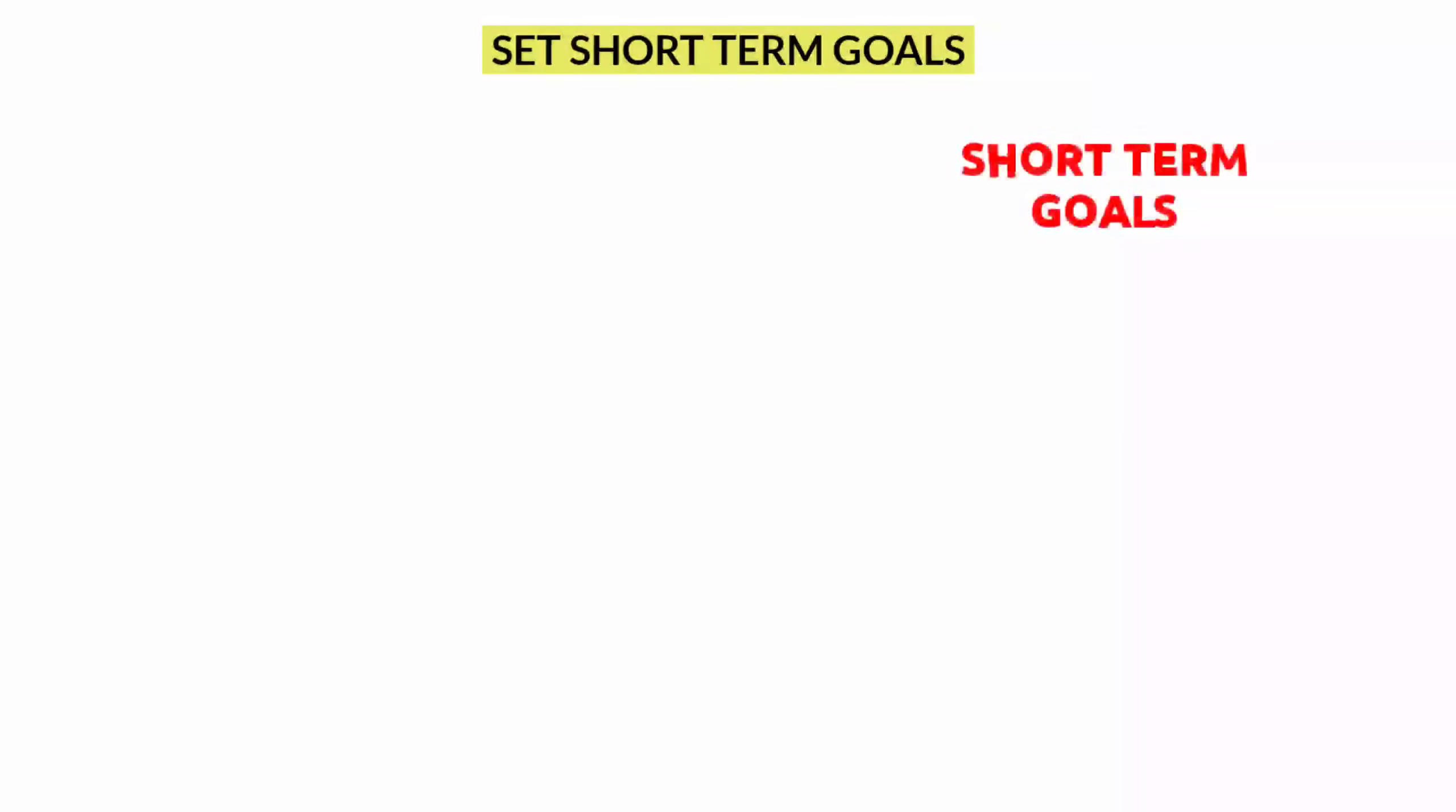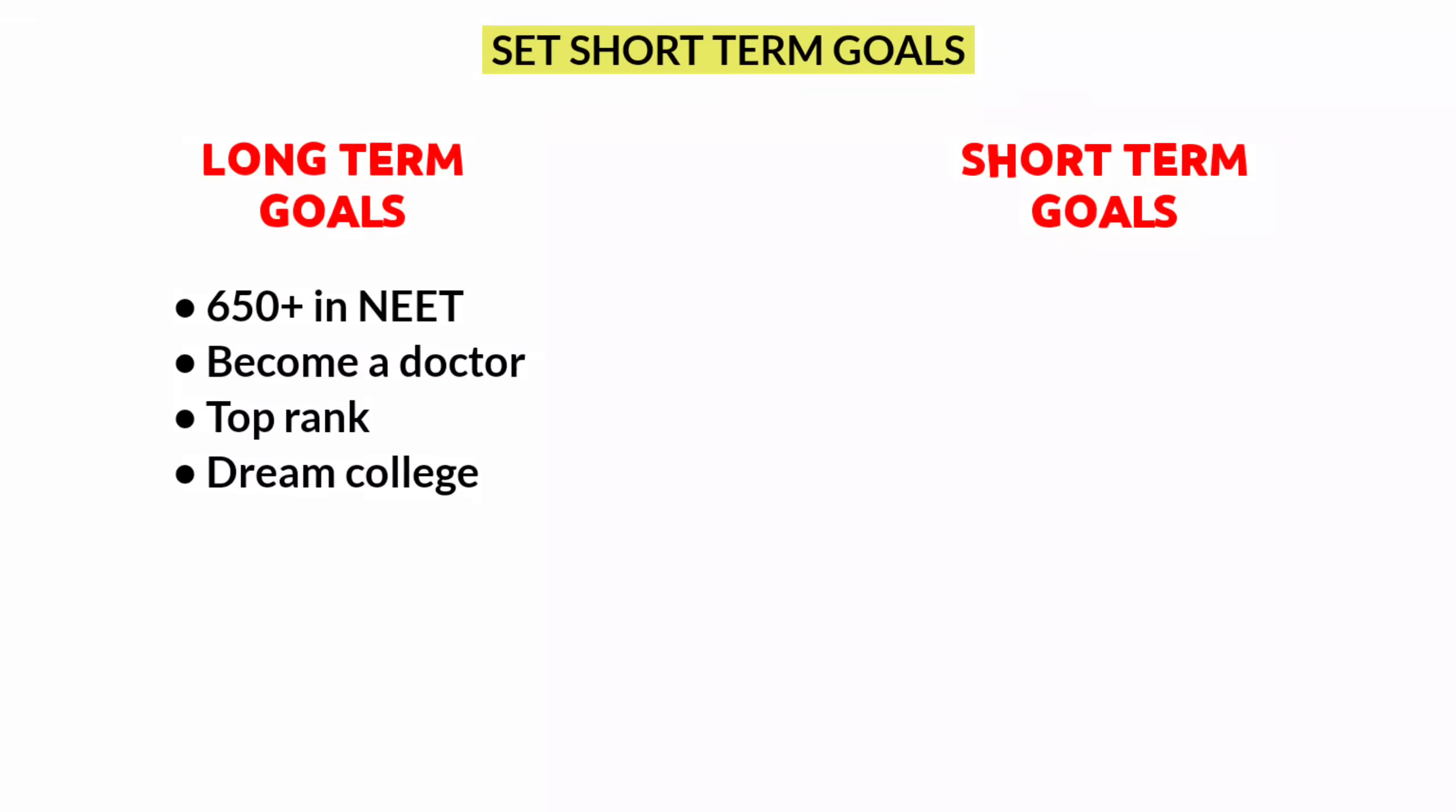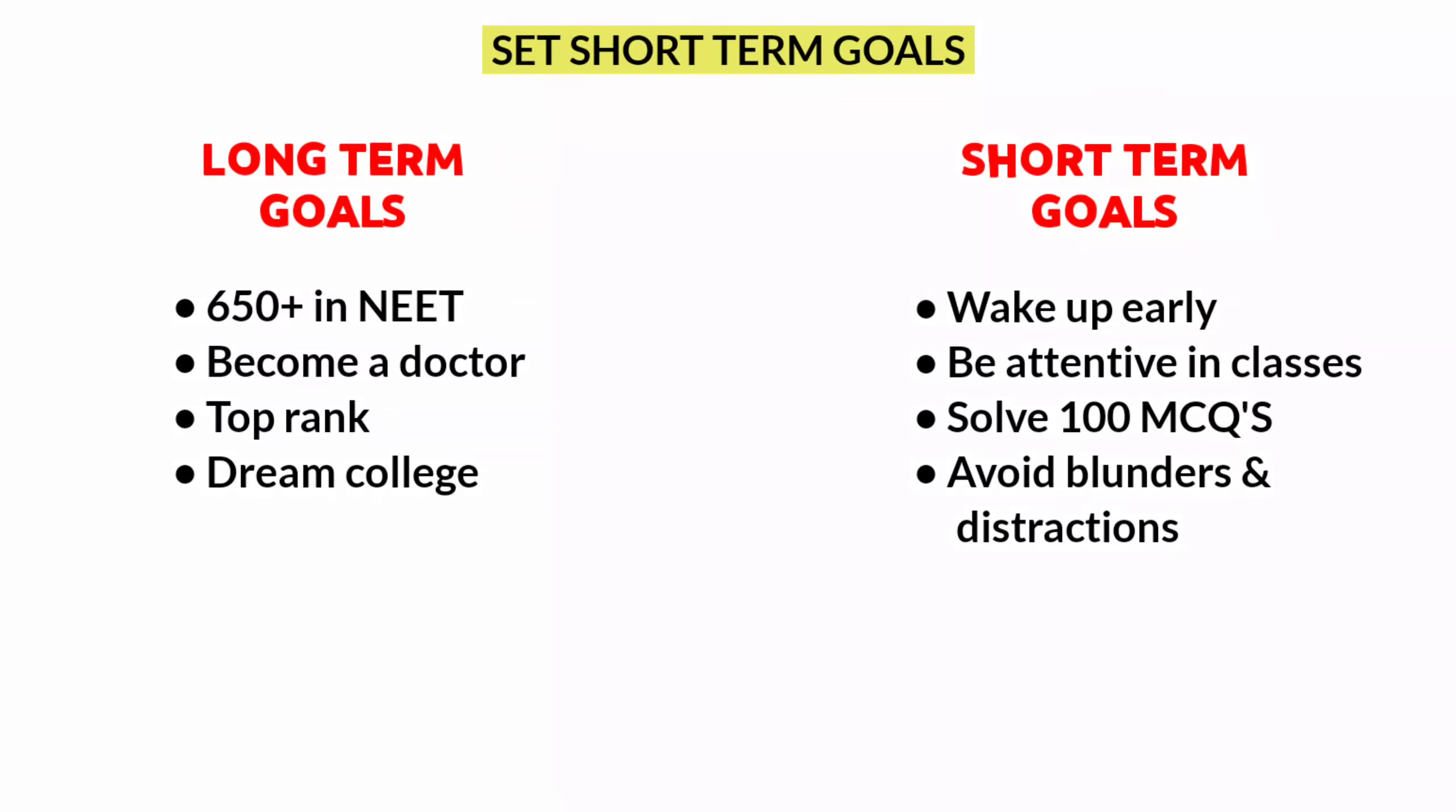It is always better to make short-term goals than long-term goals. If you set a long-term goal like I want to score 650 plus marks, I want to become a doctor, I want to get a seat in top college, you won't notice a big change in your daily activities. Instead, set short-term goals like I want to wake up early, I want to be very attentive in class, I want to solve 100 MCQs in physics today, I want to avoid distractions like overusing mobile phones. If you set these kinds of small goals, definitely you can notice much change in your daily routine. And seriously, your short-term goal will definitely help you to achieve your long-term goals.